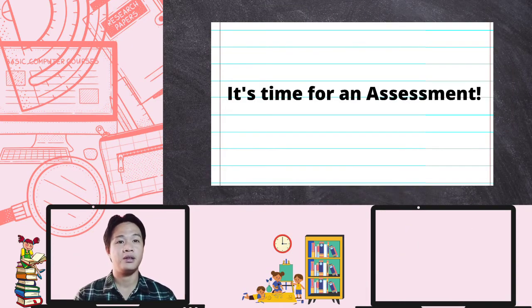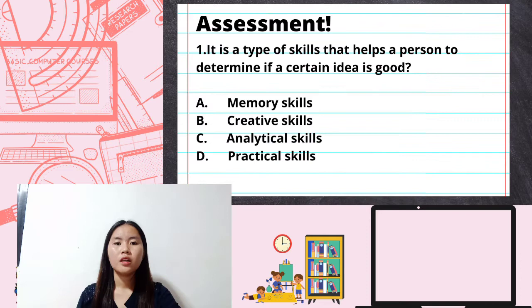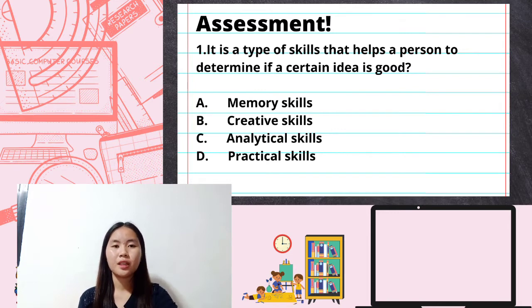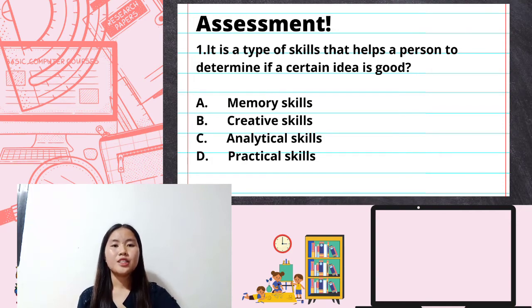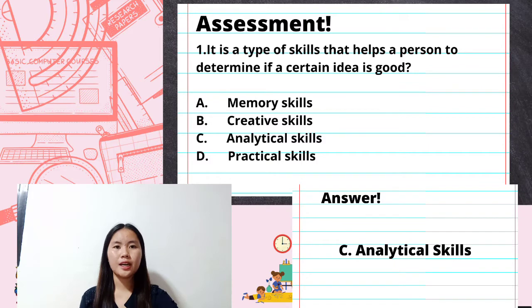Now let's have an assessment as an exit slip. Question one: it is a type of skill that helps a person determine if a certain idea is good. Letter A: memory skills; Letter B: creative skills; Letter C: analytical skills. The correct answer is Letter C — analytical skills.